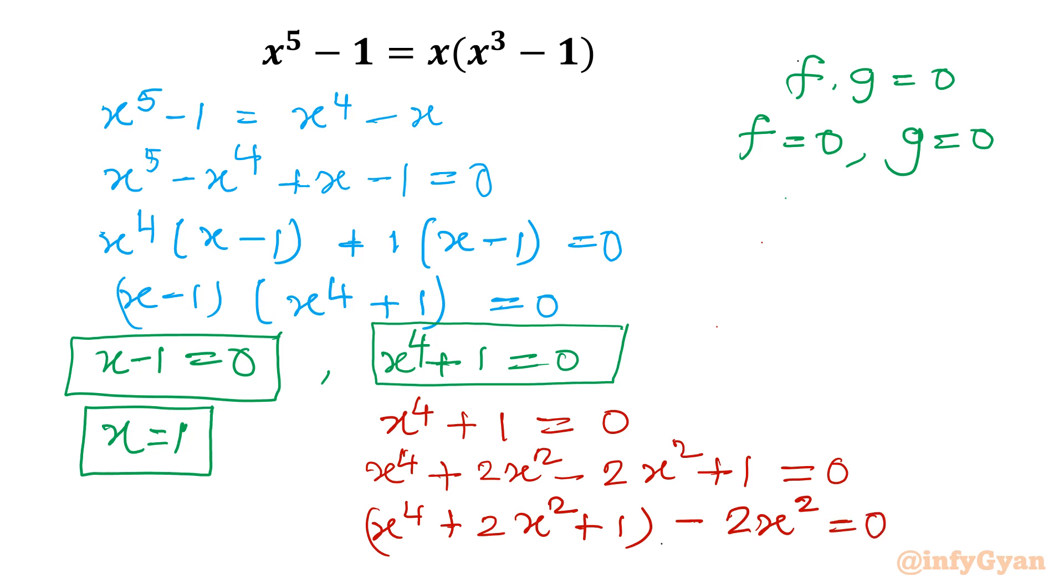So first bracket is (x^2 + 1)^2. Let me check: x^2 whole square is x^4, 1 whole square is 1, 2 times a·b is 2x^2. Yes it is correct. Minus 2x^2 = 0.